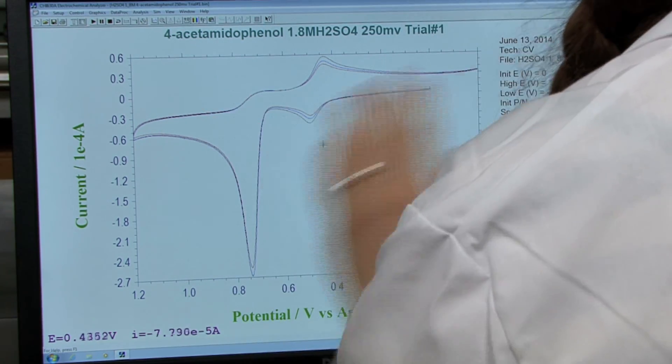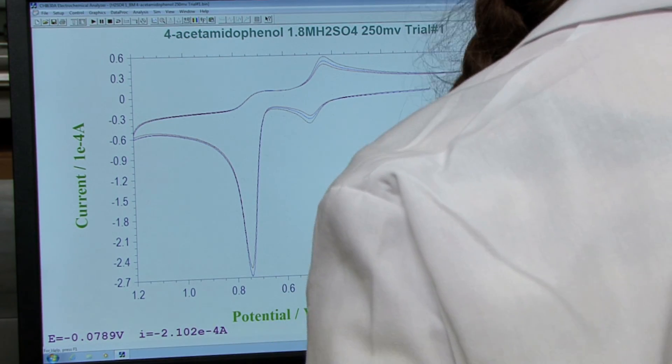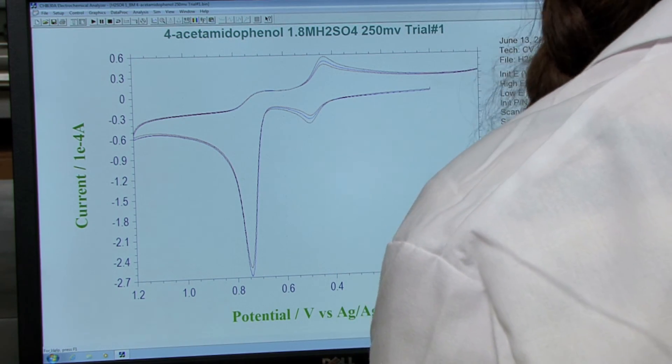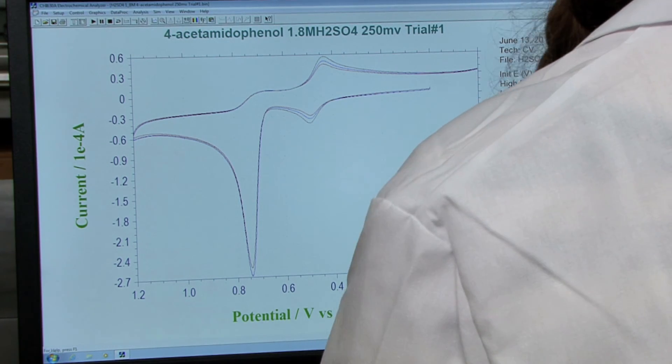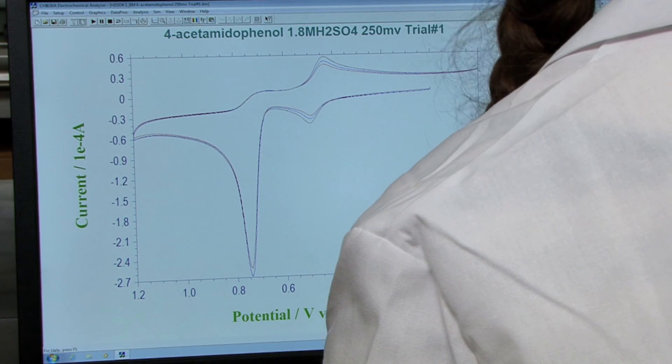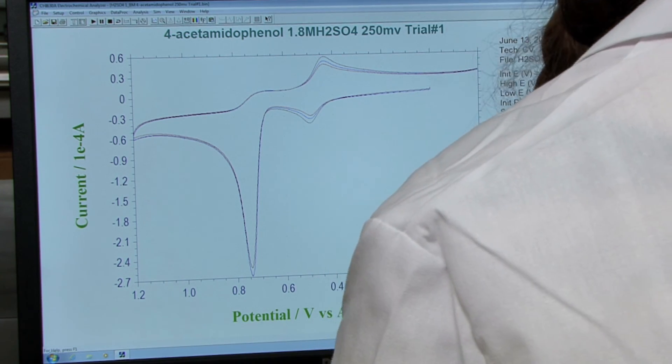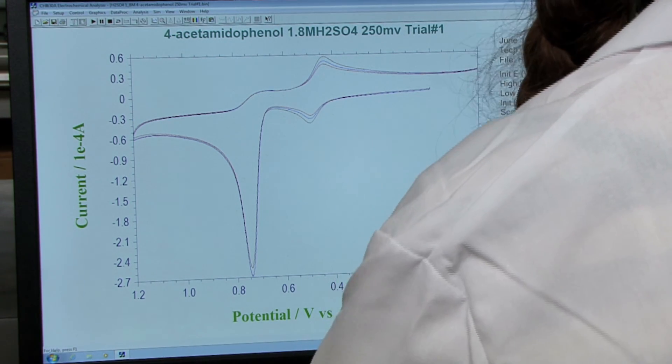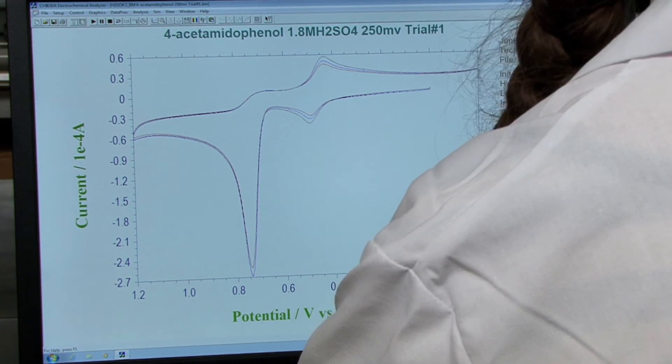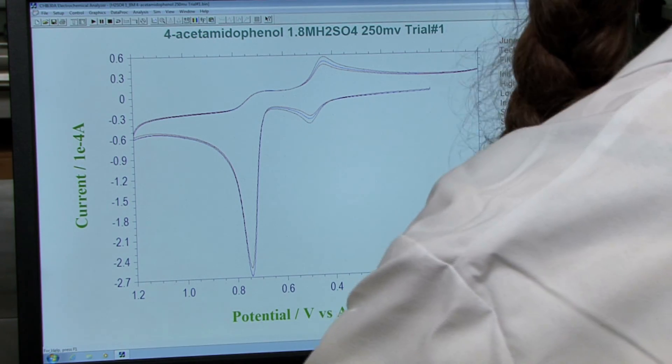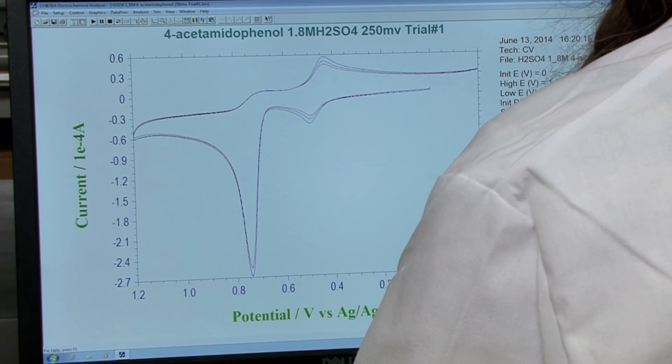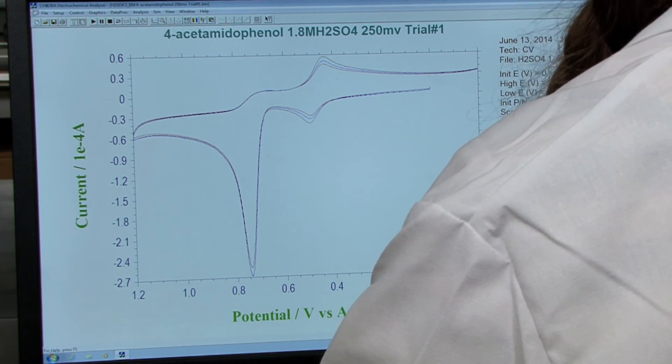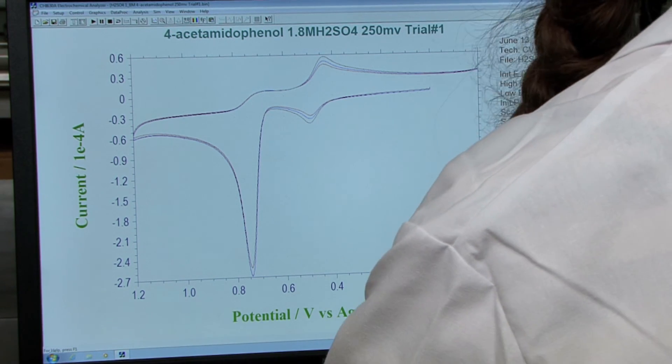The overlays should look similar to the one shown on the screen. For day one of the experiment, you'll need to make three overlays. The first overlay will have 12 different CV plots: three trials of your blank electrolyte potassium nitrate, three CVs of blank electrolyte sodium sulfate, three trials of your two millimolar potassium ferricyanide in sodium sulfate, and three trials of two millimolar potassium ferricyanide in potassium nitrate. The second and third overlays from day one correspond to the concentration studies you did with potassium ferricyanide. The last overlay corresponds to the two millimolar potassium ferricyanide studies at different scan rates.